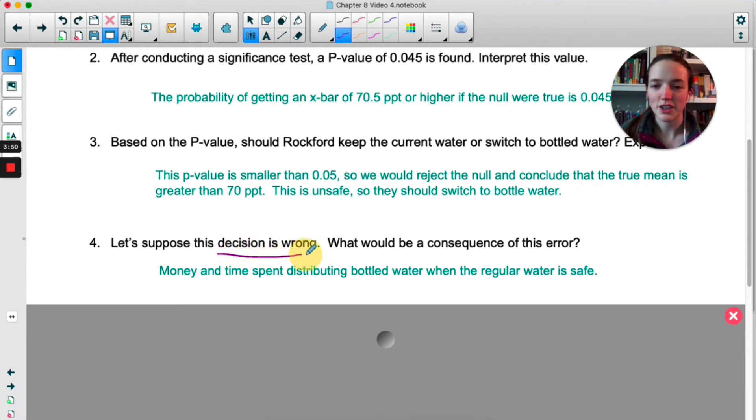So if that decision is actually wrong, what we've committed is called a Type 1 error. You've rejected the null but it was actually true. Anytime you reject the null when it was actually true we call that a Type 1 error.